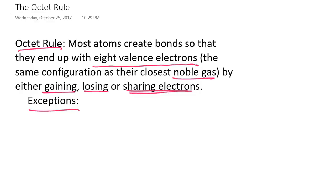So that's the first exception to the octet rule: elements like hydrogen, lithium, beryllium, and boron will typically end up with 2 valence electrons rather than 8, because helium — their nearest noble gas — has only 2 valence electrons.